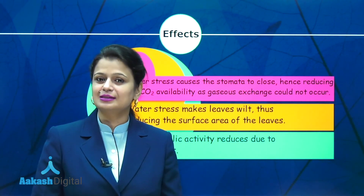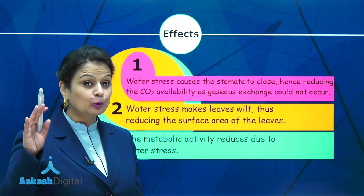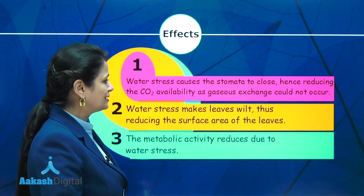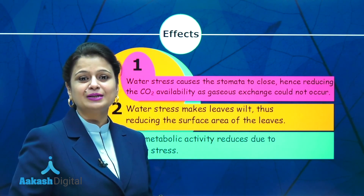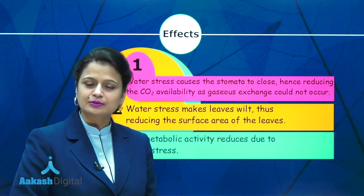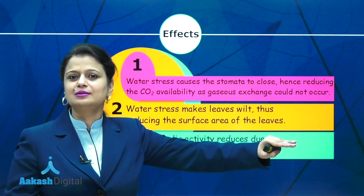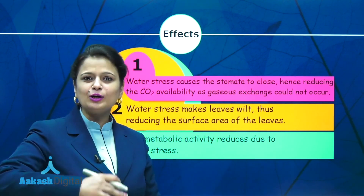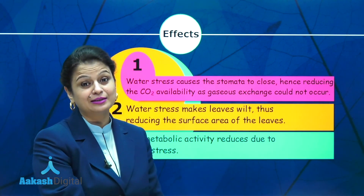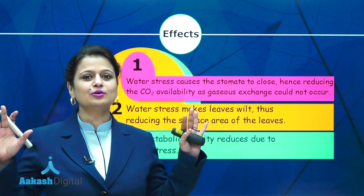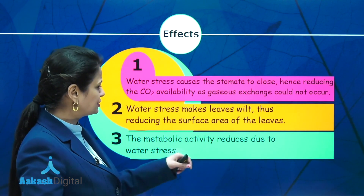How does water affect photosynthesis indirectly? When there is a water crisis — under water stress conditions — there is closure of stomata. If closure of stomata occurs, this is going to reduce carbon dioxide availability. If the concentration of carbon dioxide decreases, it is surely going to decrease the rate of photosynthesis. So please be clear: under water stress conditions, photosynthesis is not affected directly. The closure of stomata reduces carbon dioxide availability, which then affects photosynthesis indirectly.